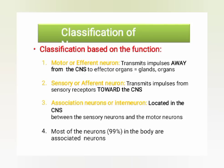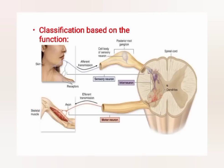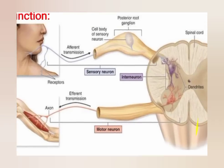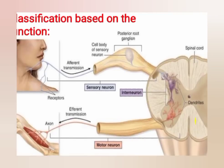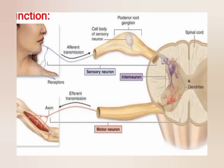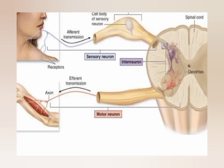The third is the associate neuron or interneuron, located in the CNS between the sensory neurons and the motor neurons. Most neurons — 99 percent — in the body are associate neurons. Here is an example of the functional classification: a sensory neuron sends the message into the interneuron where interpretation occurs, and the response goes out by the motor neurons.